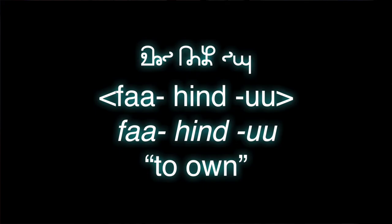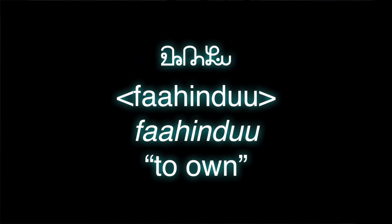Another quick example shows two words that are homophonous but spelled differently. There is a word that means to own or to possess. The way this word was formed was from an affix 'fa' added to a root 'hind,' and then turned into a verb so that the citation form would have been at one point 'fa-hindu.'